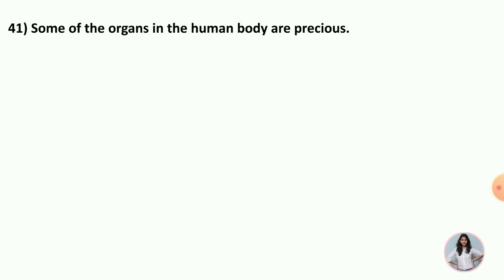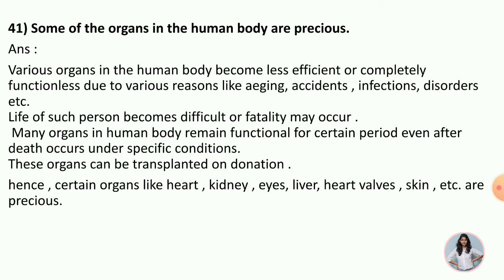Next: Some of the organs in the human body are precious. Various organs in the human body become less efficient or completely non-functional due to various reasons like aging, accident, infection, or disorders. Life of such a person becomes difficult or fatality may occur. However, many organs in the human body remain functional for certain periods even after death under specific conditions. These organs can be transplanted through donation. Hence, certain organs like heart, kidney, eye, liver, heart valve, skin, etc. are precious.